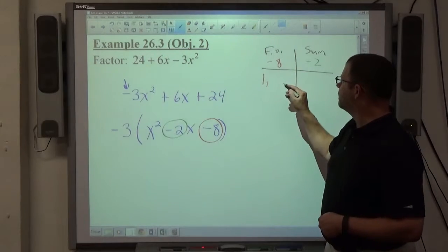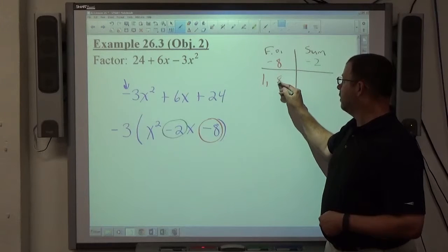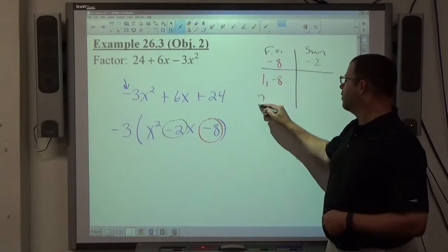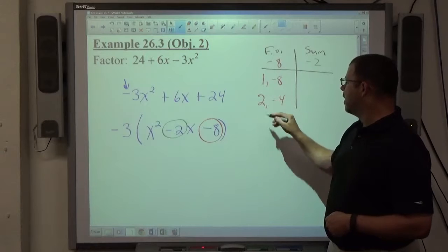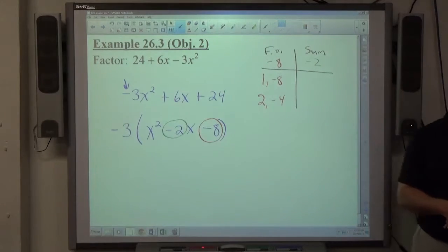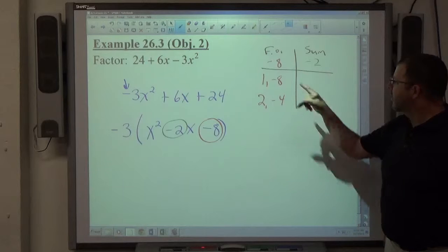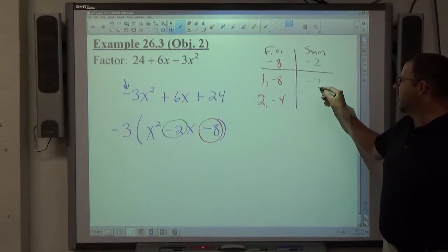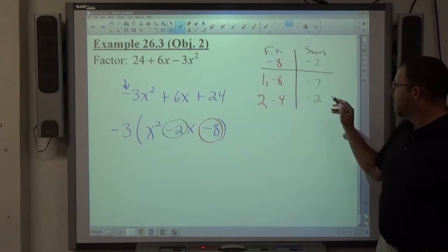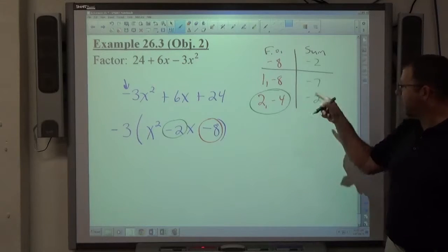If I start at 1, 1 times what? 8, and 8 has to be negative. 2 times 4, and 4 has to be negative. 3 doesn't go into 8. 4 we've already gotten, so there's the whole list. Well, 1 plus -8 is -7. 2 plus -4 is -2. This is the correct pair of numbers, so it is factorable.